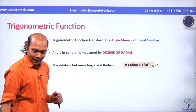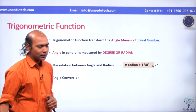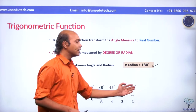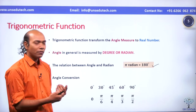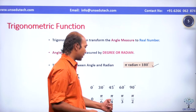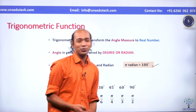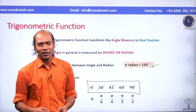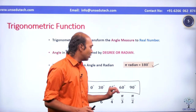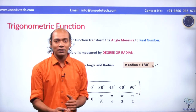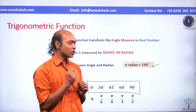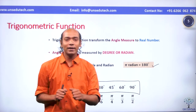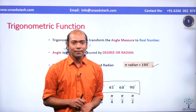Take some special angles: 0°, 30°, 45°, 60°, and 90°. When you convert them, you get 0, π/6, π/4, π/3, and π/2 — just remember these. Mostly in Class 10, we solve problems using degree measure and radian is not required. But learn it anyway, because in the next year the first chapter will be on radian measure — that is why it is mandatory.